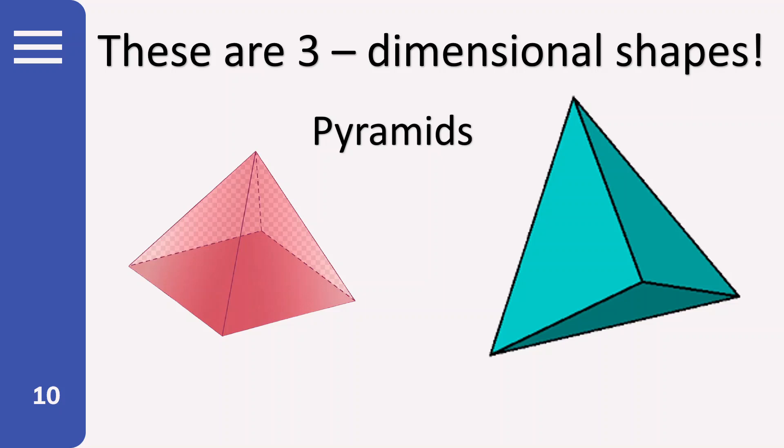Alright, pyramids. We also have different kinds of pyramids and different names. So this one, the first one, look at the base or the bottom part. The shape is a square, so we call this a square pyramid. And this one, all the faces are triangles, so we call this shape a triangular pyramid.